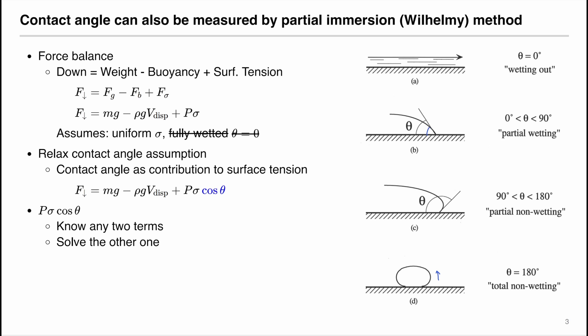For example, if I know the perimeter and surface tension, I can calculate the contact angle. If I know the perimeter and contact angle, I can solve for surface tension, which is what we assume when cosine theta equals one — for a fully wetted surface, we can directly calculate the surface tension. Or if we know the contact angle and surface tension, we can calculate the perimeter of a test sample. In this experiment, you will be given two of these terms and solving for the other one.